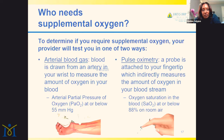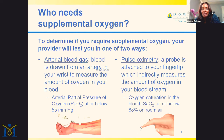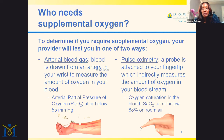Who needs supplemental oxygen? There are two ways to test. The first is an arterial blood gas, where blood is drawn from an artery in the wrist to measure the amount of oxygen in your blood. If you fall below 55 millimeters of mercury, you qualify for oxygen based on insurance measures. Most commonly, we do pulse oximetry in clinic — a probe is attached to your finger and indirectly measures the amount of oxygen in your bloodstream. If your oxygen saturation falls below 88% on room air, you technically qualify for oxygen.